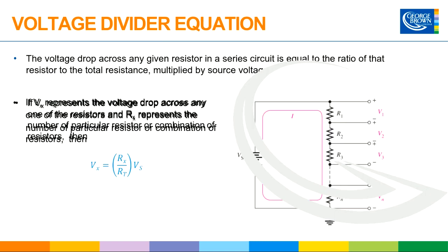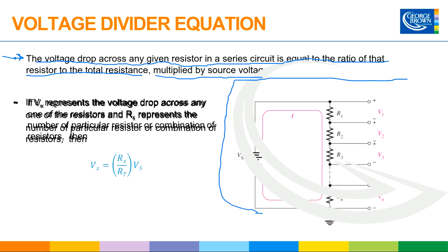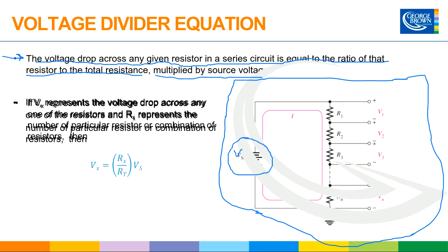Let's work with this one here. Notice point number one: the voltage drop across any given resistor in the series circuit is equal to the ratio of that resistor to the total resistance, multiplied by the voltage source. We have a voltage supply — a battery, Vs — connected in series to a bunch of resistors: R1, R2, R3, and so on up to however many we want.